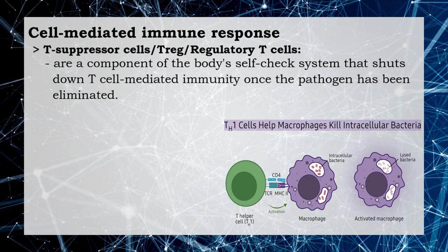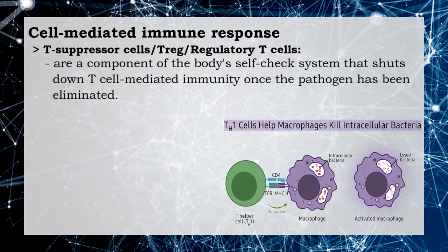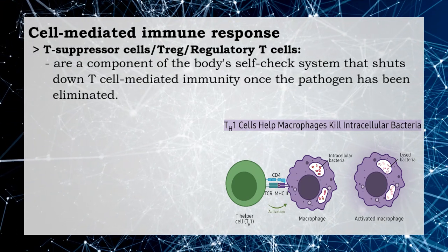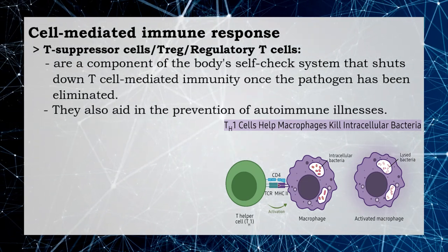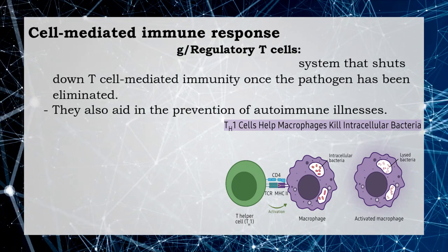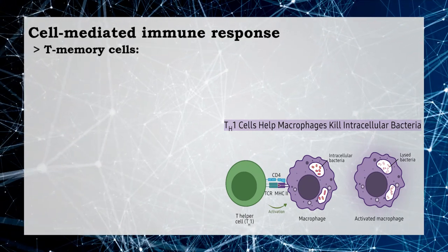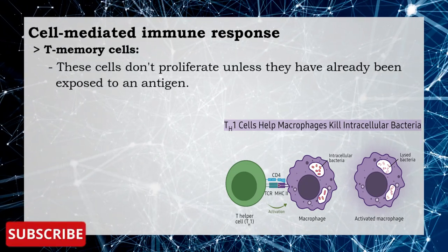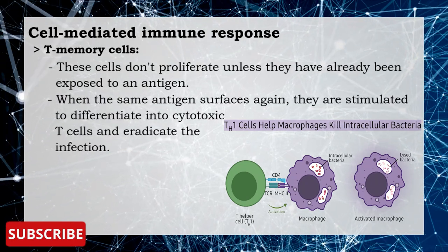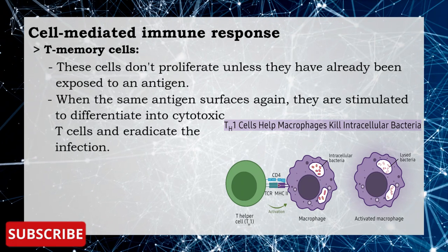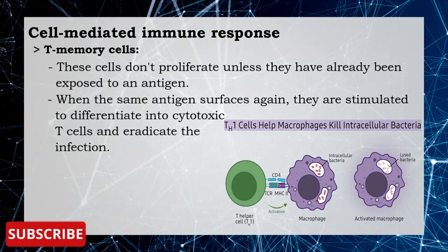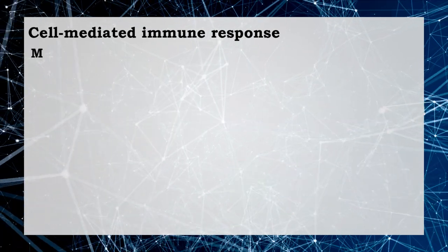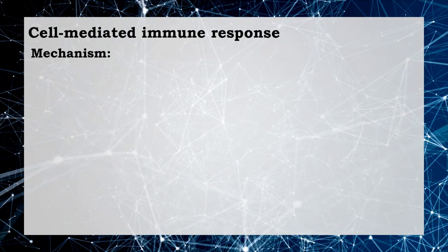T suppressor or regulatory T cells are the component of the body's self-check system that shuts down T cell-mediated immunity once the pathogen has been eliminated. They also aid in the prevention of autoimmune illnesses. T memory cells do not proliferate unless they have already been exposed to an antigen; when the same antigen surfaces again, they are stimulated to differentiate into cytotoxic T cells and eradicate the infection.